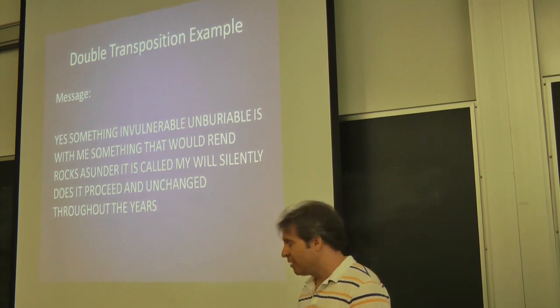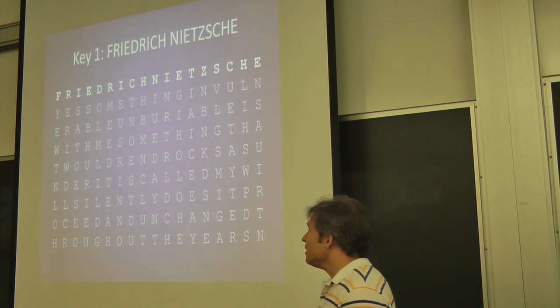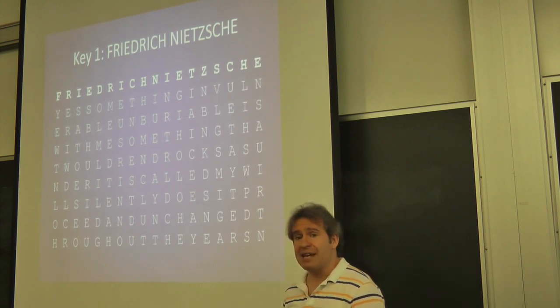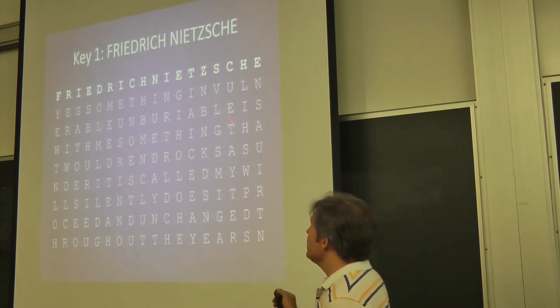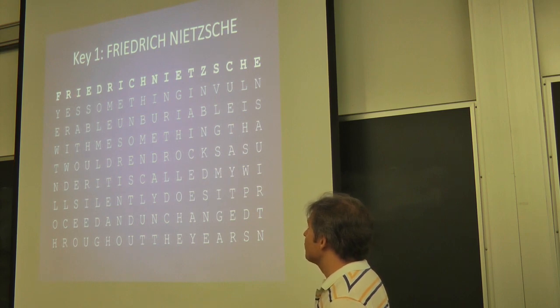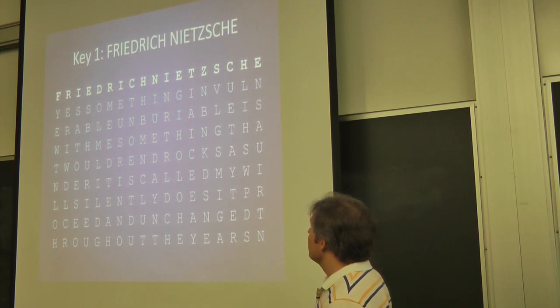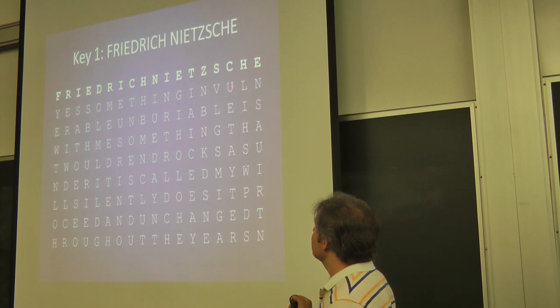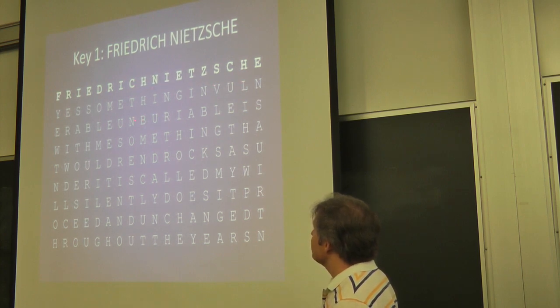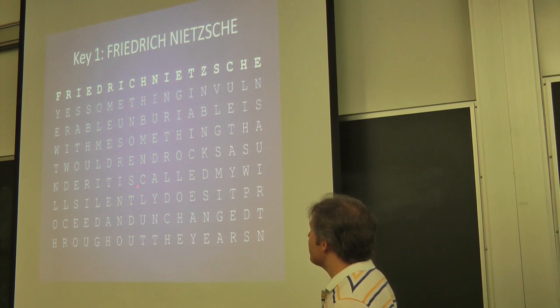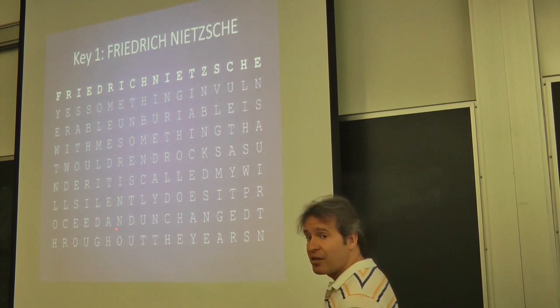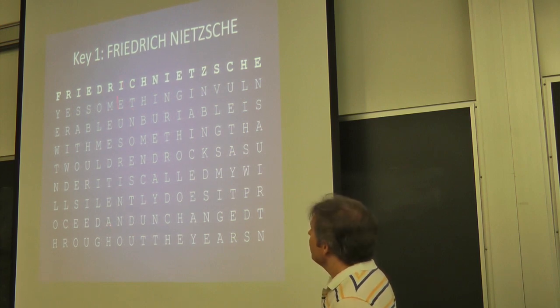So here's a quote from Friedrich Nietzsche. Why don't we use Friedrich Nietzsche as the first key? So I write Friedrich Nietzsche right above the message. The message is written out in rows. And then I look. Do I have any A's here? No. Do I have any B's? No. Oh, I have a C. So I read down this column. T-N-O-E-S-T-D-U. That's how my cipher begins.